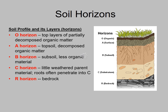It starts with the top — the O horizon, the top layer of partially decomposed organic material: leaves, sticks, the dead bodies of microbes, insects, or whatever else is there. It's usually a thin layer on top of the next horizon, which is the A horizon, more informally called the topsoil. It's made up of decomposed organic matter and is usually darker and richer because it has more organic matter in it, along with a lot of plant roots, moisture, air, and microbial activity.